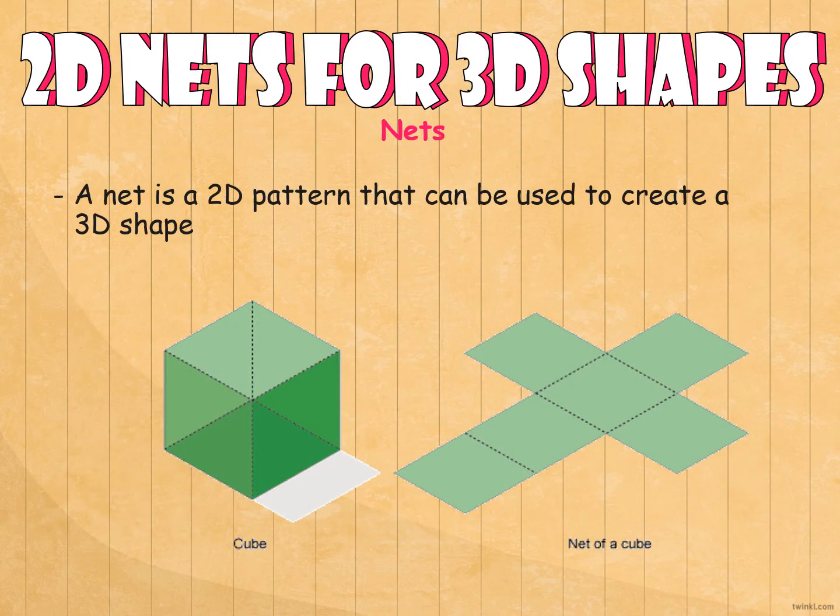A net is a 2D pattern or two-dimensional pattern that can be used to create a three-dimensional shape. From a cube, this is the net of a cube. As you can see, one, two, three, four, five, six. There are six squares that forms a cube.